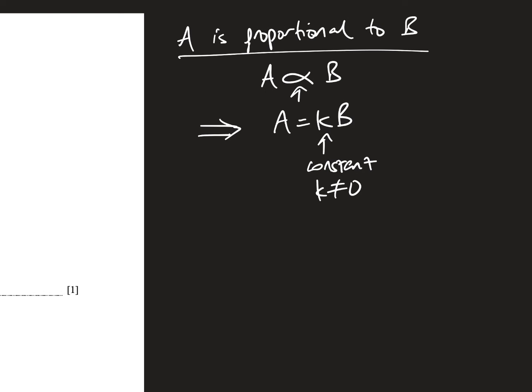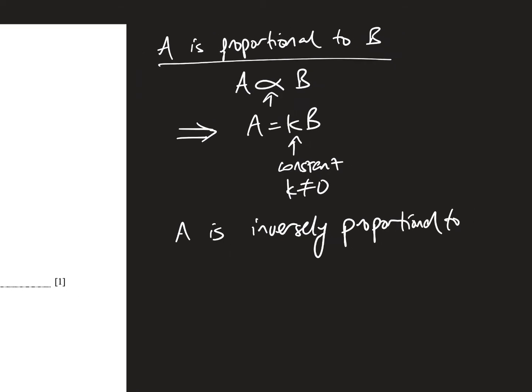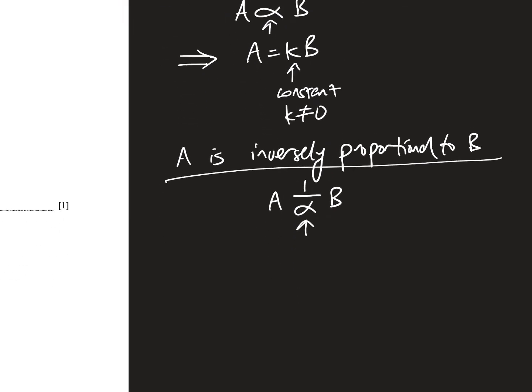And so, we can also write, if A is inversely proportional to B, sometimes we will write it this way, inversely, this means inversely proportional to, and what it really really means is A is equals to K over B, where K is some constant, and K is not 0.